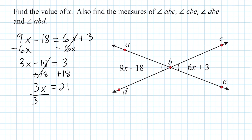Anything divided by itself is positive 1, leaving us with positive 1X. On the right-hand side we do the same thing to balance our equation: 21 divided by 3 is 7. So we have determined that the value of X is equal to 7.